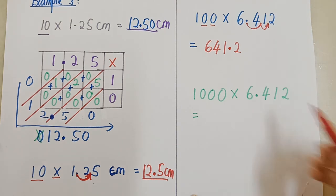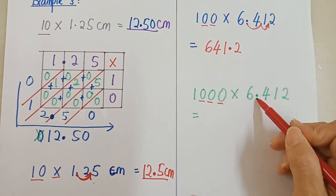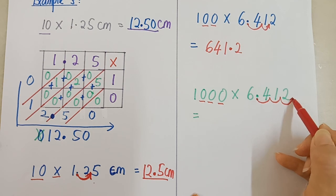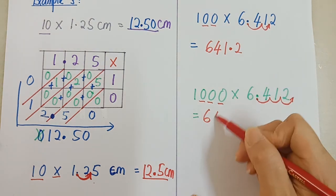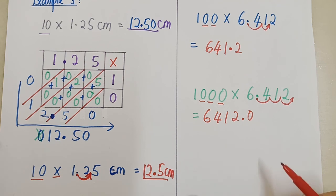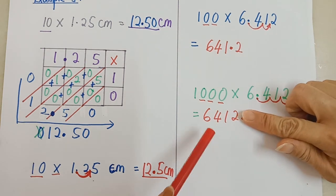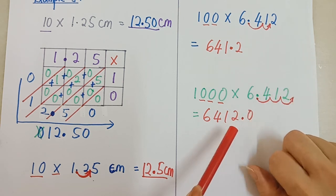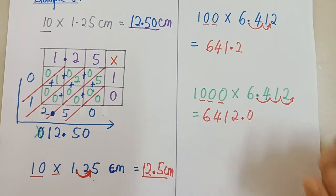Tengok contoh ini pula. Yang ini times 1,000. 1,000 3 sifar. 3 sifar, kita gerak 3 langkah. Gerak ke kanan 3 langkah. So letak pen kamu kat sini. Gerak 3 ke kanan. 1, 2, 3. Point sudah bergerak dan dia berhenti di belakang 2. So jawapannya 6412. Point ada kat sini kan? Kalau awak nak tulis point, mesti letak sifar. So jawapannya ialah 6,412. Ataupun kamu nak letak point 0 pun boleh. 6,412 point 0. Sama. Kamu juga boleh tulis sebagai 6,412. Cukup. Dua-dua ni diterima.